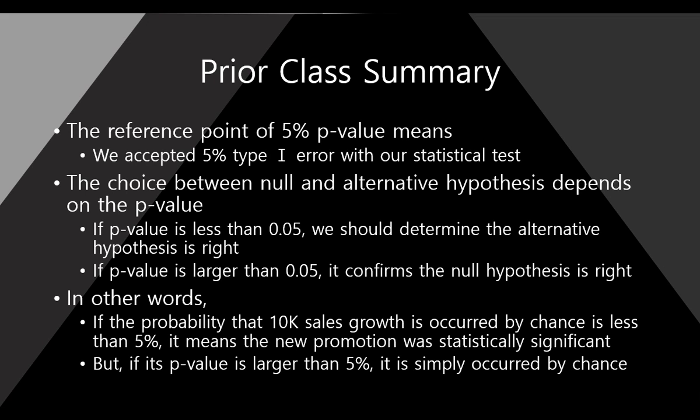In prior class, we learned about the 5% p-value reference. The reference point of 5% p-value means that we accept 5% type-one error with our statistical test. And the choice between null and alternative hypothesis totally depends on the p-value.